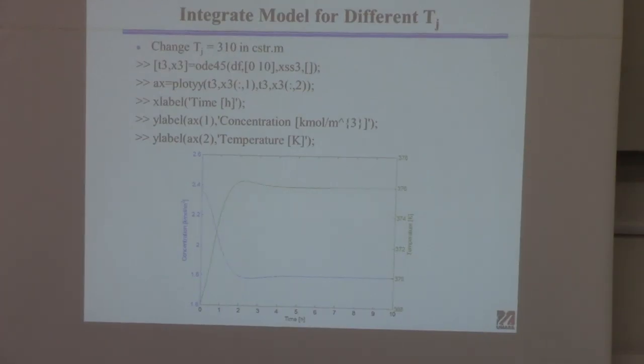The temperature of the reactor and the temperature of the cooling jacket, or the fluid in the cooling jacket. And so if that temperature goes up to 310, you're going to remove less heat. That means the reactor temperature should go up.